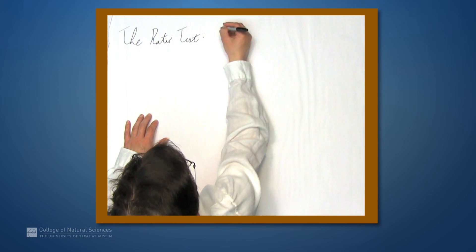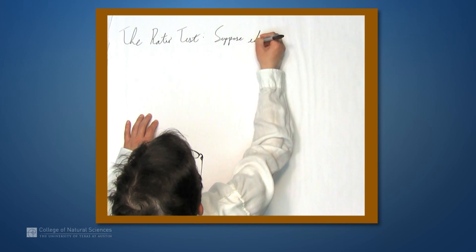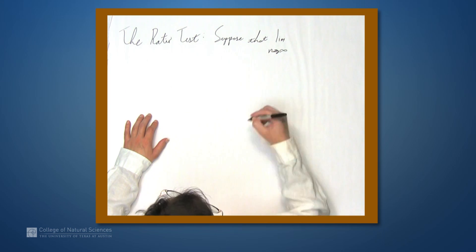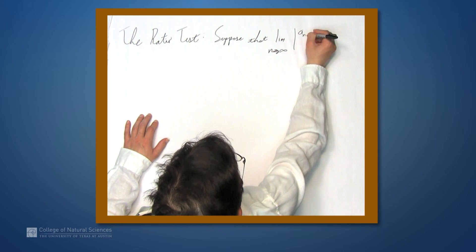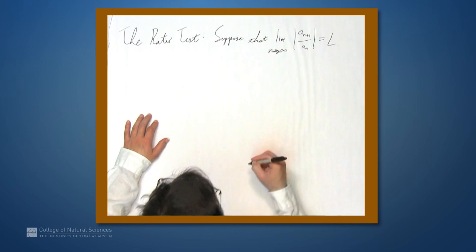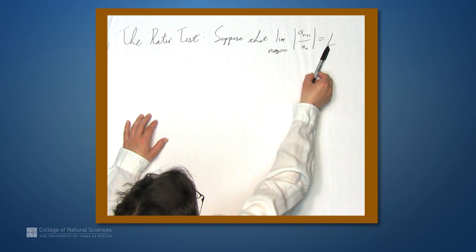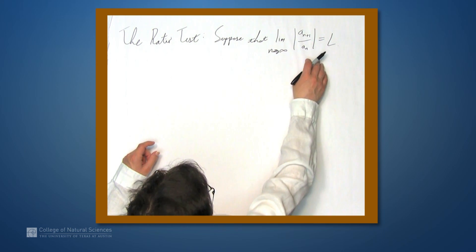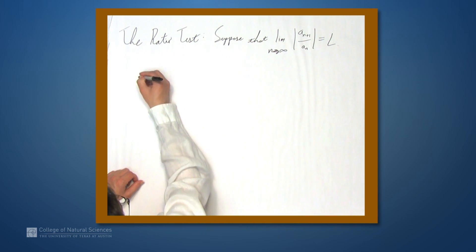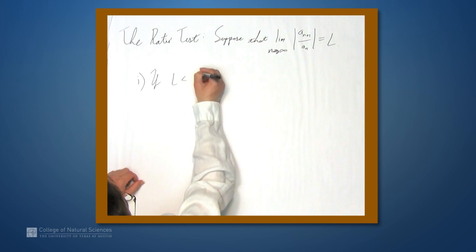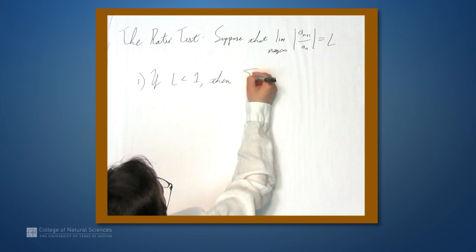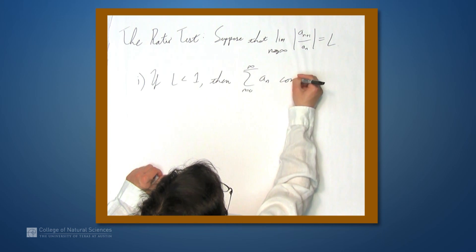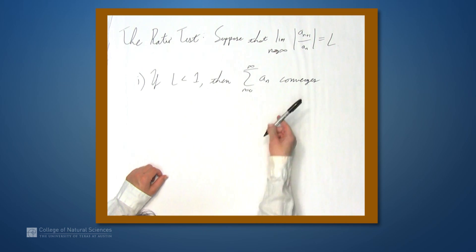The ratio test begins by supposing that the limit as n approaches infinity of the absolute value of a sub n plus 1 over a sub n is L. L could be infinity — we're including that under the heading of 'this limit exists' — but it can't oscillate; it has to be either a real number or infinity. If this limit equals L, we can conclude that if L is less than 1, then the series sum from n equals 0 to infinity of a sub n converges. In fact, it converges absolutely.